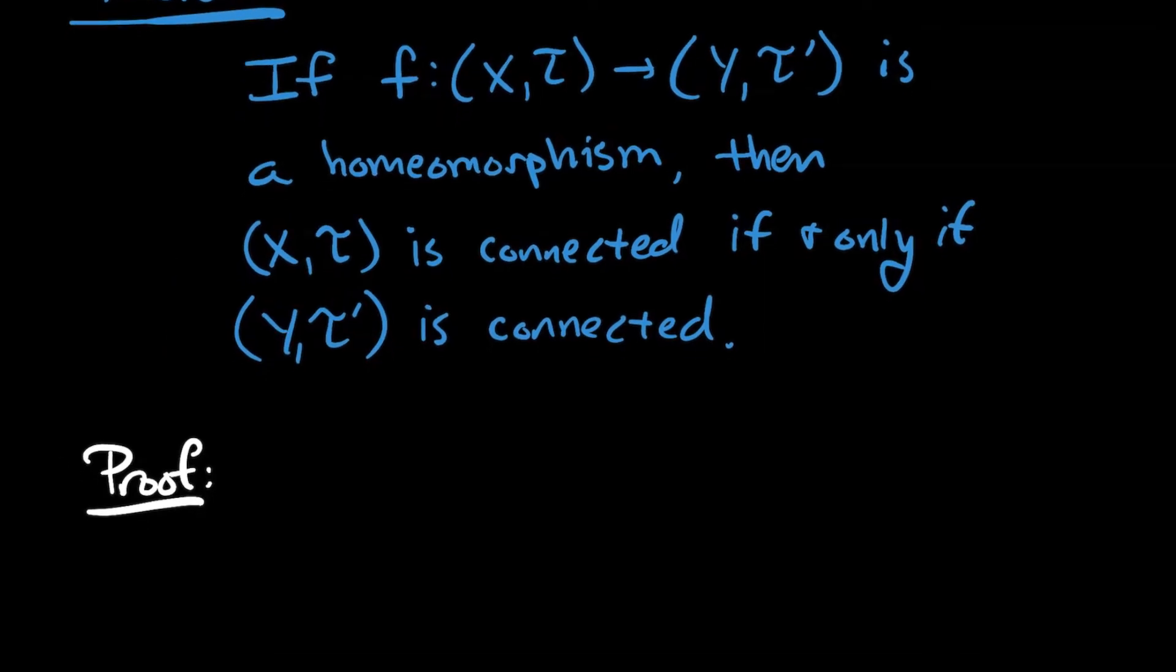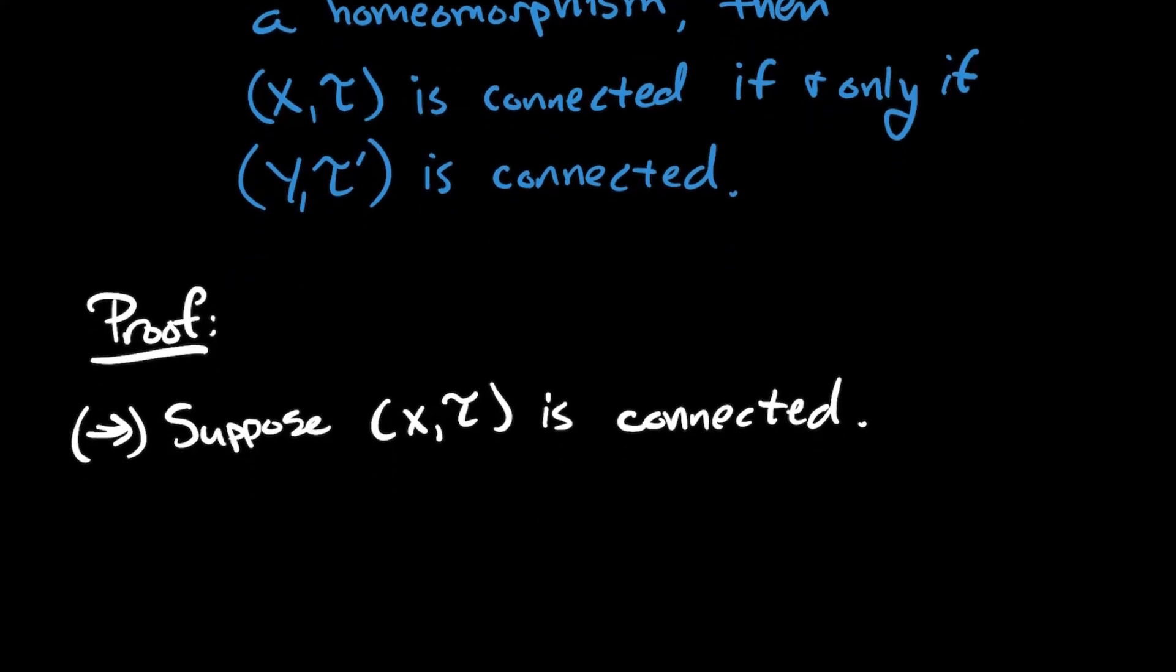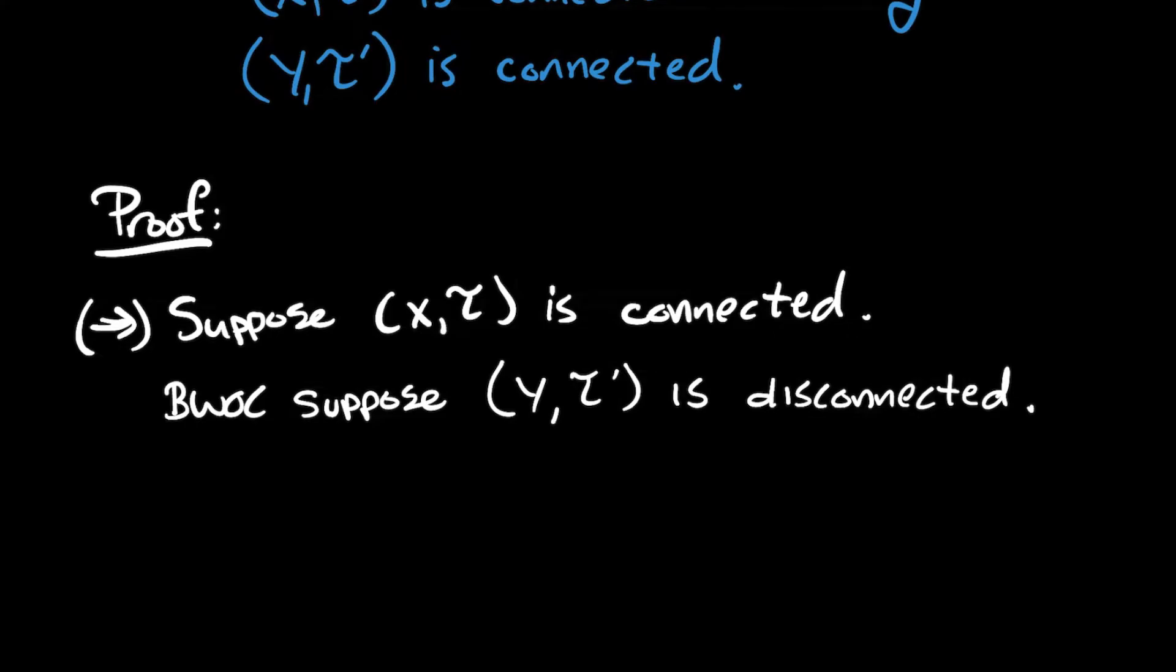The proof is actually kind of similar to the previous example that we just did. So let's go the forward direction. We do have an if and only if there after all. So suppose that the first set, or the first space (X, T) is connected. By way of contradiction, let's suppose that Y with its topology T prime is disconnected.